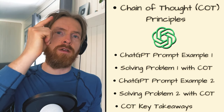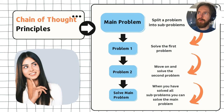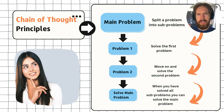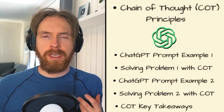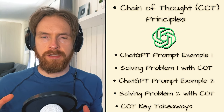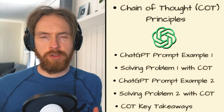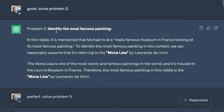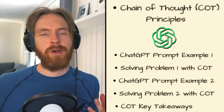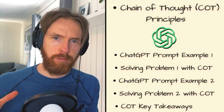Today we are going to start with the Chain of Thought Principle. I'm going to go through some examples using ChatGPT. We're going to solve a couple of problems and go quickly through how I think about using these principles and how it can improve your output in an LLM. You will see from these examples that we can really enhance our output and even solve problems that we couldn't solve before.